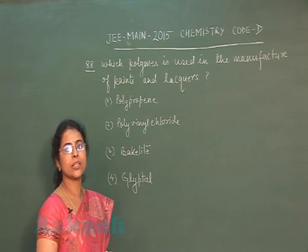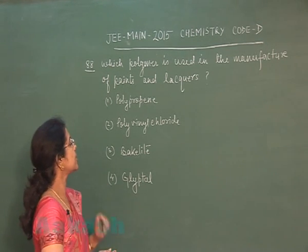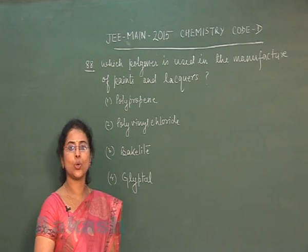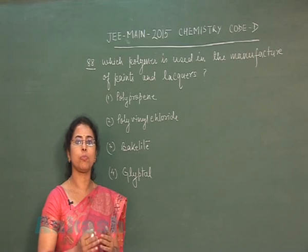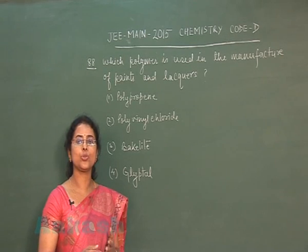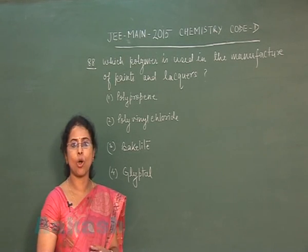We don't use it as paint or lacquer. Second option is polyvinyl chloride PVC. PVC is again a kind of plastic. PVC is used for insulation of wire.